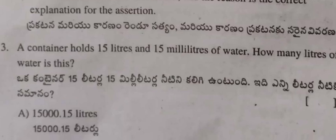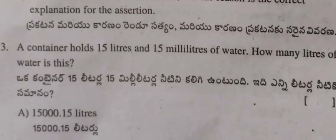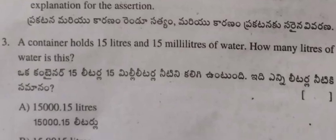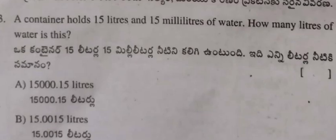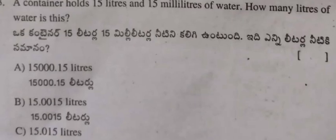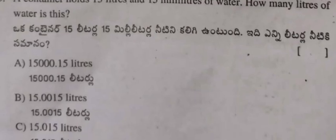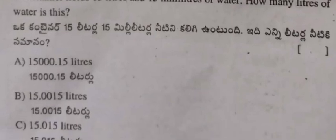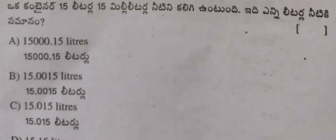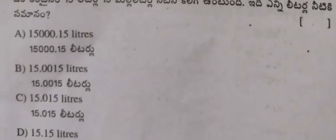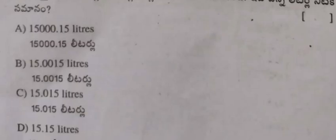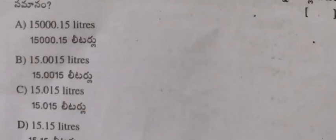Question 3: A container holds 15 liters and 15 milliliters of water. How many liters of water is this? (A) 15,000.15 liters, (B) 15.0015 liters, (C) 15.015 liters, (D) 15.15 liters.